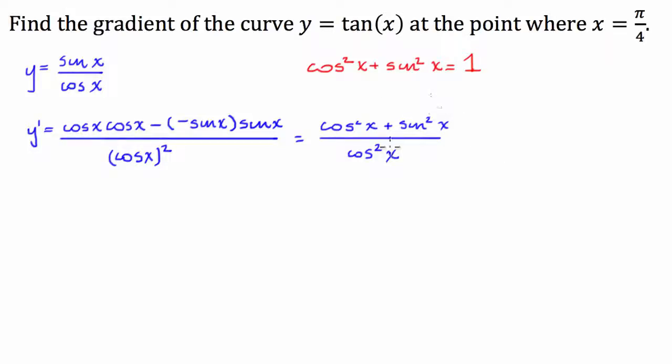And what we can do then is we can use that to simplify this equation further to 1 over cos squared x. And that's our derivative of tan. So what we're going to do now is we're going to input x equals pi over 4 into this.